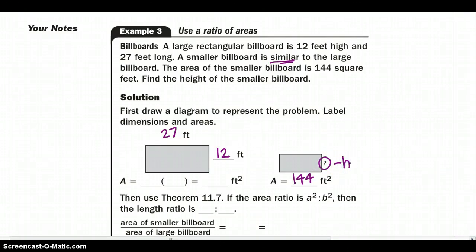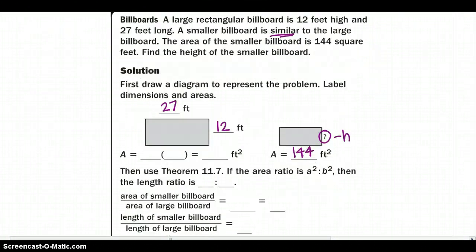Right now, do we have anything in common? It doesn't look like it, but you can find something in common. Since we have the height and our base, we know that we can find the area of this larger billboard. So we could say 27 times 12 would give me an area of 324 feet squared for my larger billboard. Now we have two things in common, so we can set our ratio up.